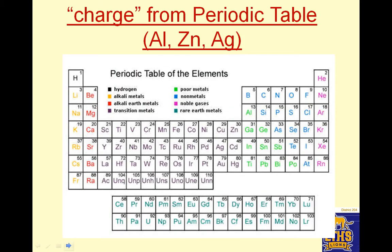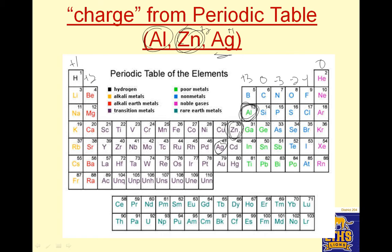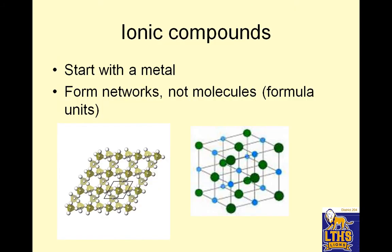Charge in the periodic table — and we talked a little bit about this in class. Plus 1, plus 2, plus 3, 0, minus 3, minus 2, minus 1, 0. Now there are a couple of things that are odd on here. Aluminum is always plus 3, which makes perfect sense. Zinc is always plus 2, and silver is always plus 1. So you need to know those guys are a little bit odd for those charges, and those charges will always be true for a while.